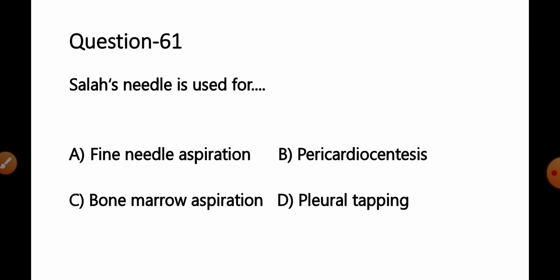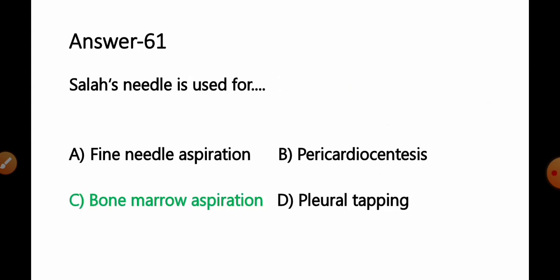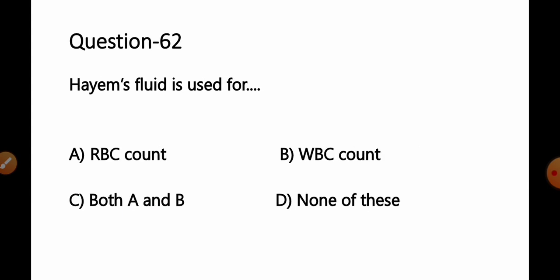Question number 61: Salas needle is used for — option A: fine needle aspiration, B: pericardiocentesis, C: bone marrow aspiration, D: pleural tapping. The needles most commonly used for obtaining bone marrow aspirates from the sternum are the Salas needle and Klima's needle. So option C, bone marrow aspiration, is the correct answer.